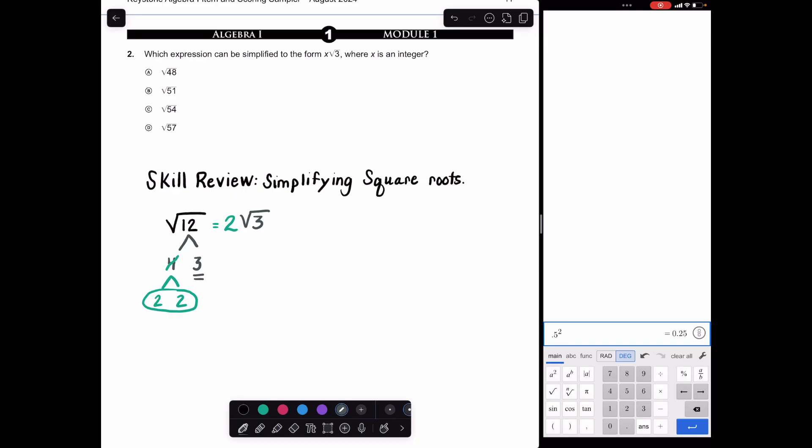They gave you 4 options and are asking which value A, B, C, or D. They want you to do what we just did for root 12 for all 4 options and see which one produces a buddy you can bring outside. We want to simplify these and see which one leaves just a 3 inside, like that 12 did. All of these are divisible by 3.